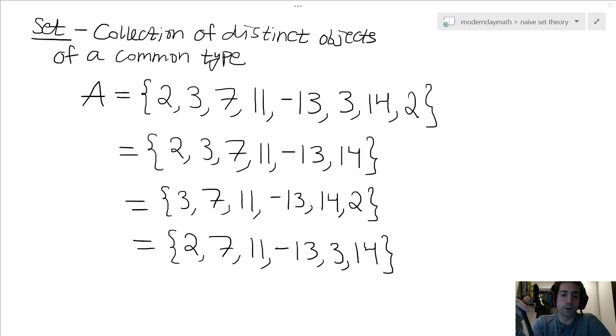So we see in this example, I've thrown in numbers, to be specific, just integers. And so in the base, we have 2, 3, 7, 11, negative 13, 3, 14, and 2. But we know that we need distinct objects, so we have different ways of filtering. So we can represent this set as 2, 3, 7, 11, negative 13, 14.